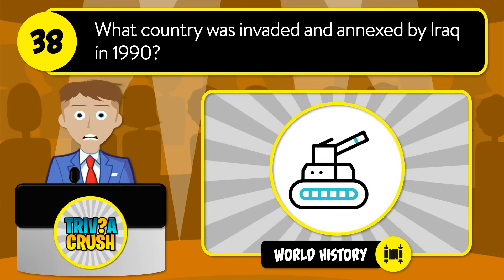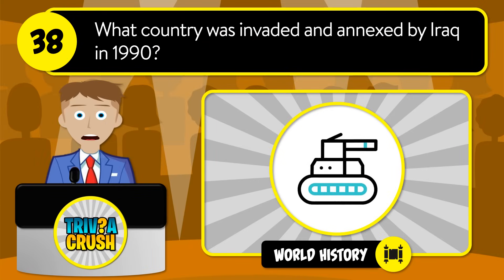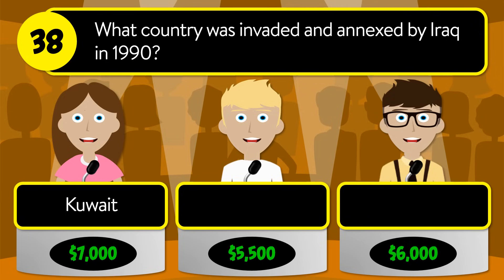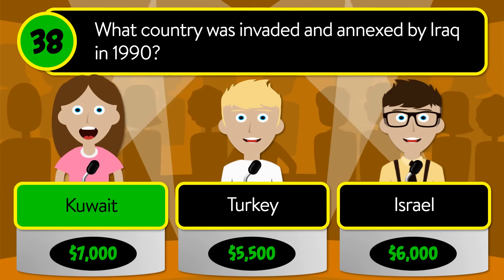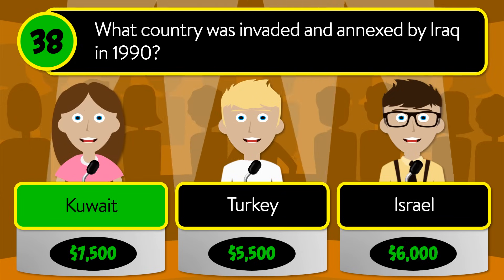Question number thirty-eight: what country was invaded and annexed by Iraq in 1990? Was it Kuwait, Turkey, or Israel? The correct answer is Kuwait.